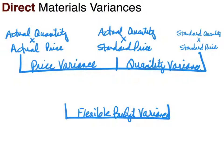Actual quantity here refers to the actual materials. Notice we're doing materials variances, so actual quantity means actual quantity of materials — not production level. Actual price would be the actual price that we paid, typically at a unit level, such as the cost per yard or cost per pound. Make sure your units are matching.